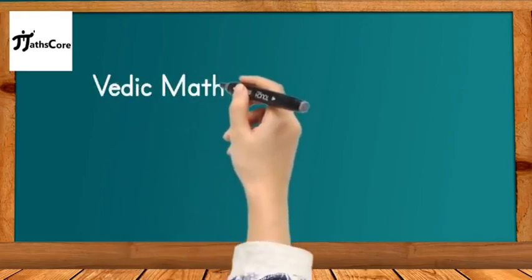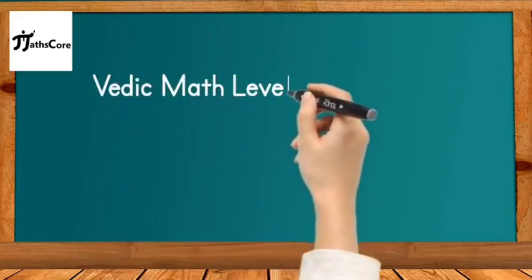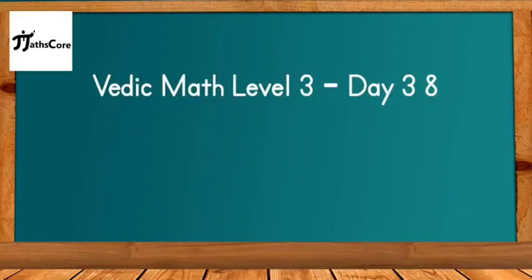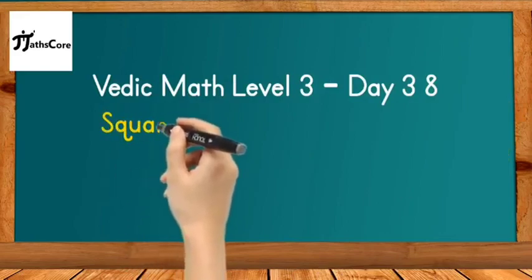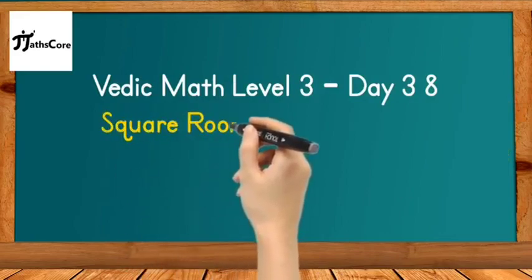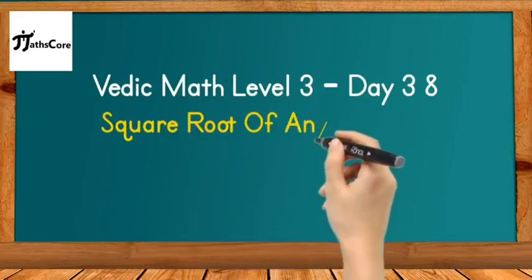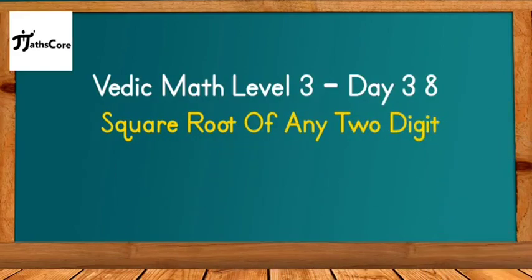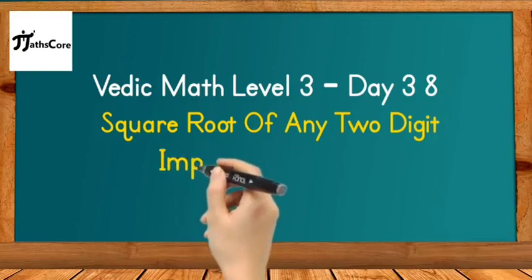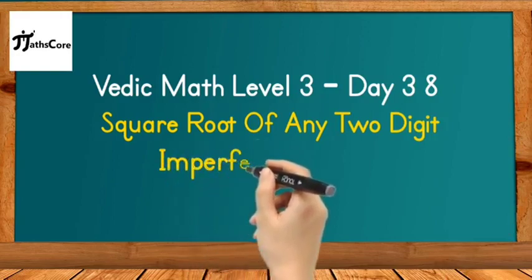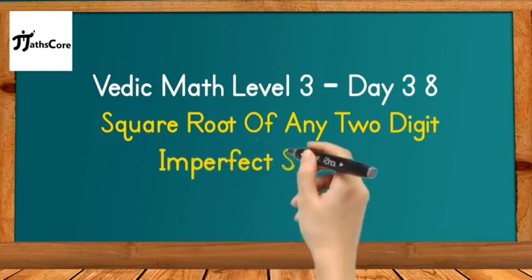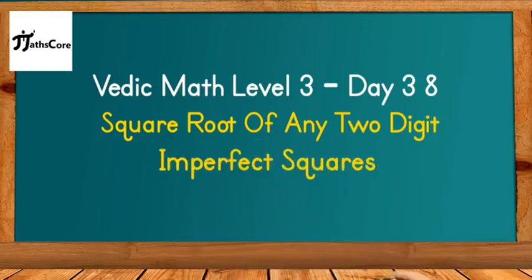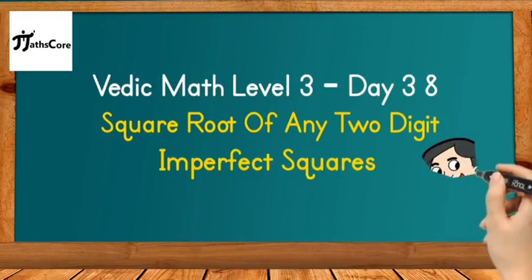Hello everyone, welcome to Math Score. It's Vedic Math Level 3, Day 38. Today we will learn about the Vedic math technique for finding the square root of any two-digit imperfect square. Imperfect square means numbers which are not perfect squares.